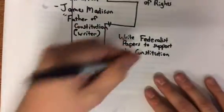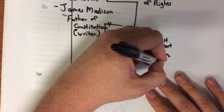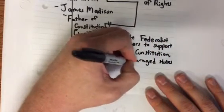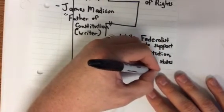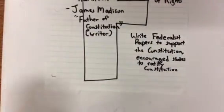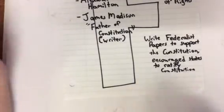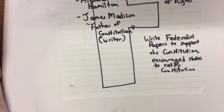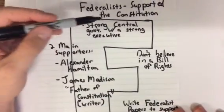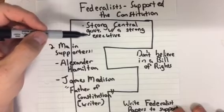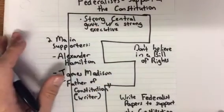The Federalist Papers encouraged states to ratify the Constitution. The three main writers were Hamilton, Madison, and also John Jay, who we'll add as another supporter. So the key information for Federalists: they were supporters of the Constitution, wanted a strong central government with a strong executive, the main supporters were Alexander Hamilton and James Madison, and they did not believe in the need for a direct Bill of Rights.